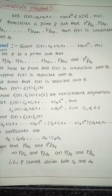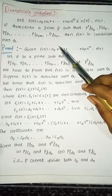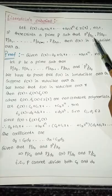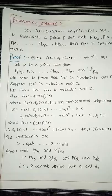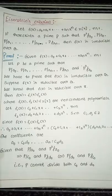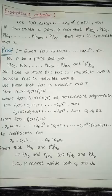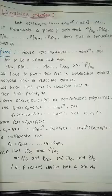Let f(x) = a0 + a1·x + ... + an·x^n belong to Z[x] with n ≥ 1. If there exists a prime p such that p does not divide an, p divides a0, a1, ..., a(n-1), p squared does not divide a0, then f(x) is irreducible over Q. Irreducibility means f(x) cannot be expressed as a product of two non-constant polynomials, and Eisenstein's criterion is a test for irreducibility.